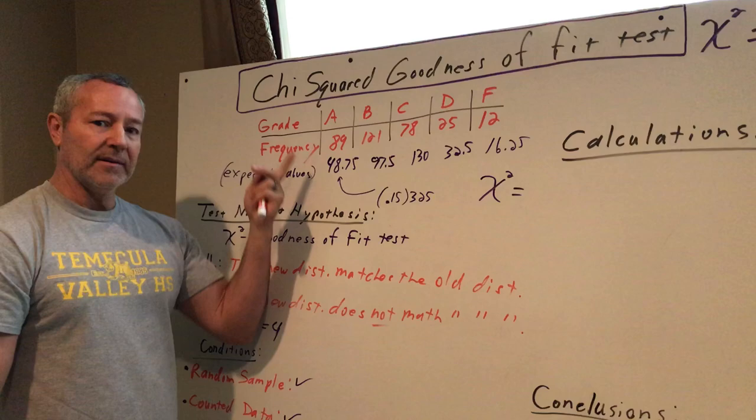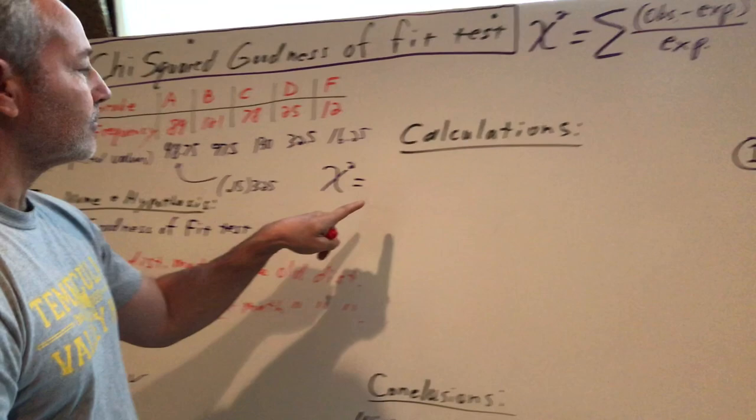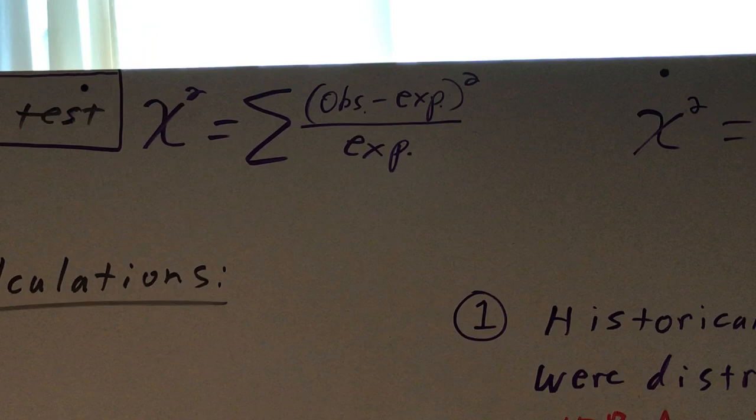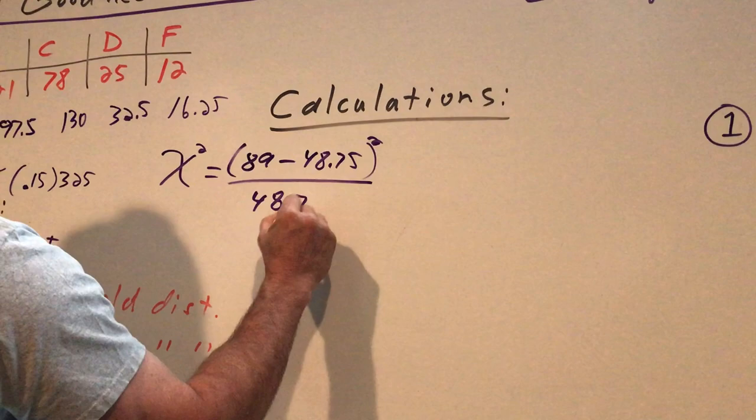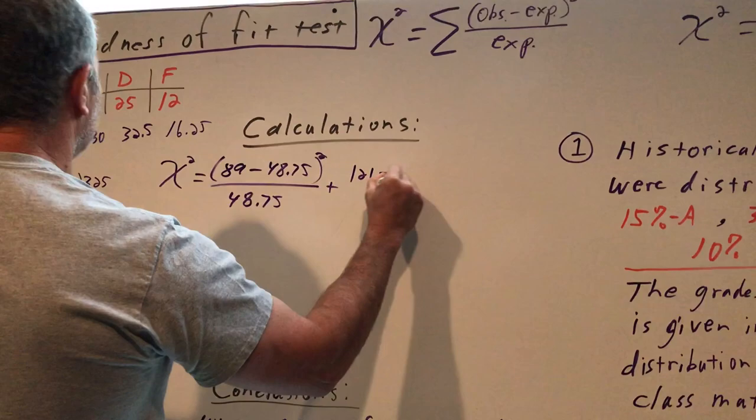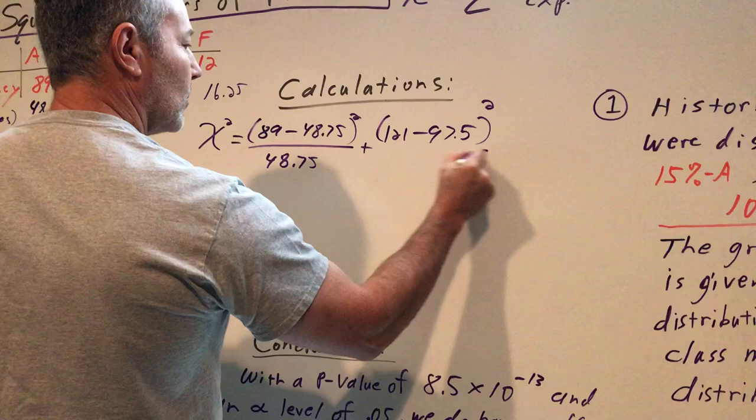On to calculations. Our chi-squared statistic is the observed minus the expected squared over the expected. Our first value for the A's, the observed is 89 minus the expected, 48.75, squared over the expected, 48.75, plus our B's, 121 is observed, minus 97.5, squared over 97.5.